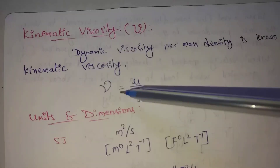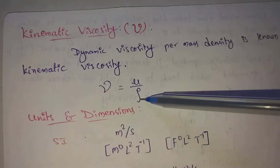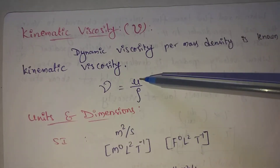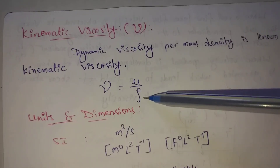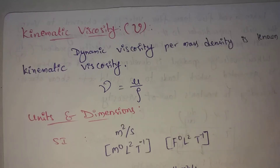Kinematic Viscosity equals mu divided by rho, where mu is dynamic viscosity and rho is mass density. This is a very simple definition.